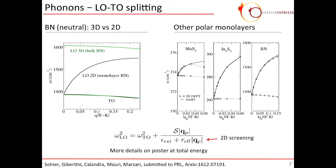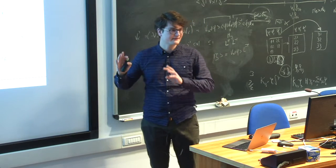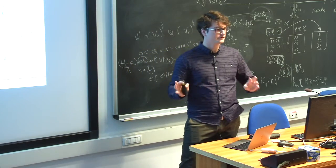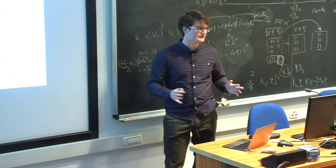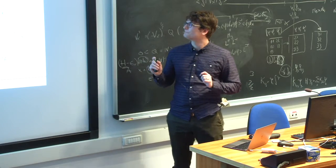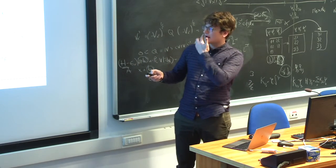Now, if we do this in monolayer boron nitride using the 2D cutoff, we see that there is a drastically different behavior. The LO phonon, the yellow phonon, the splitting vanishes at gamma. It's zero here at gamma. But, it starts with a finite slope. The dispersion of the yellow phonon starts with a finite slope here. And this is typically two-dimensional. You cannot get this finite slope with periodic images. So, you need the 2D cutoff to simulate this.